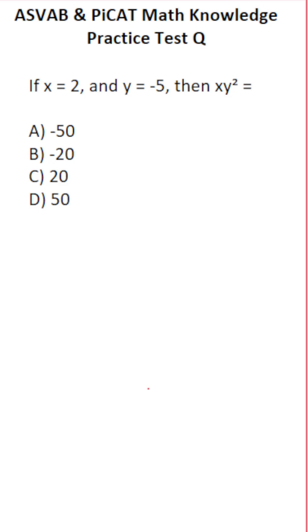So again, we're trying to evaluate the expression x times y squared when x equals 2 and y equals negative 5. So we're going to plug in 2 for x and negative 5 for y.